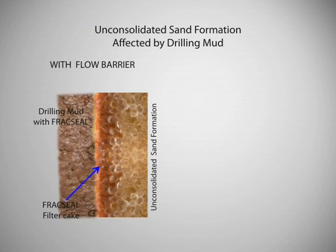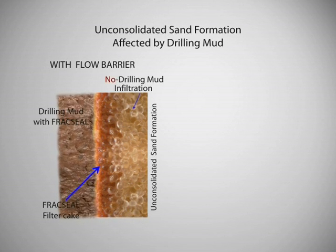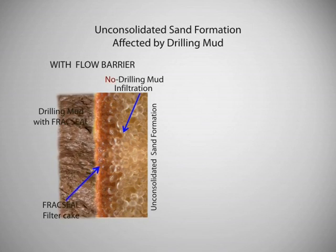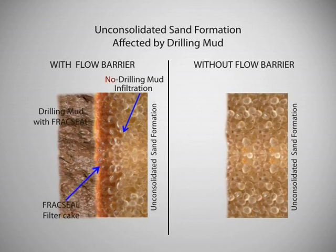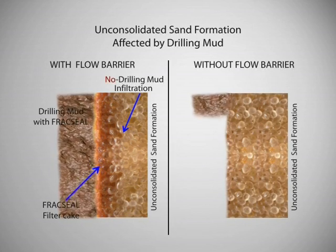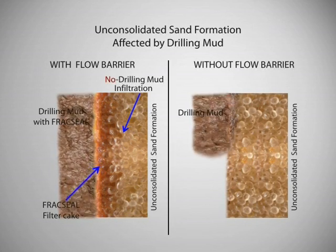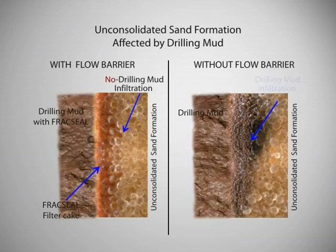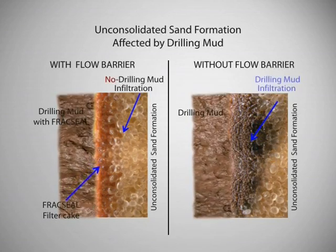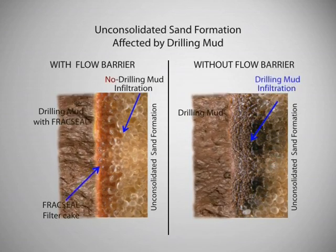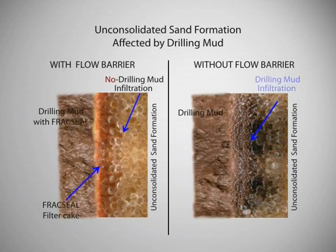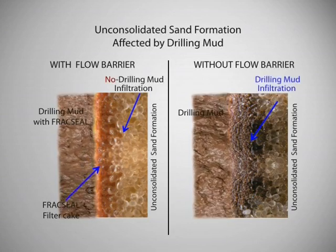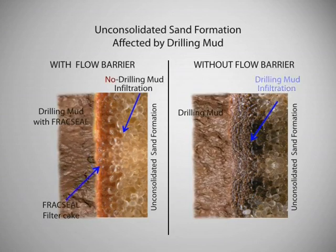Unconsolidated sand formation is one other section prone to fluid loss in a hole. Mudcake with Fraxel forms an impermeable seal as a flow barrier, preventing any fluid infiltration and providing optimum wellbore protection.